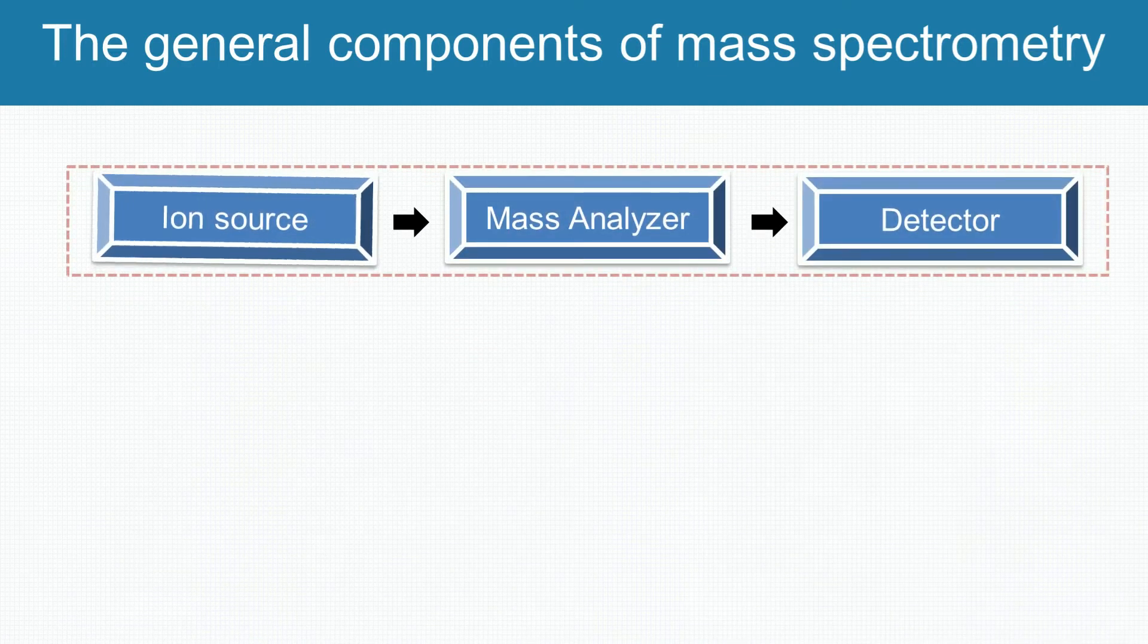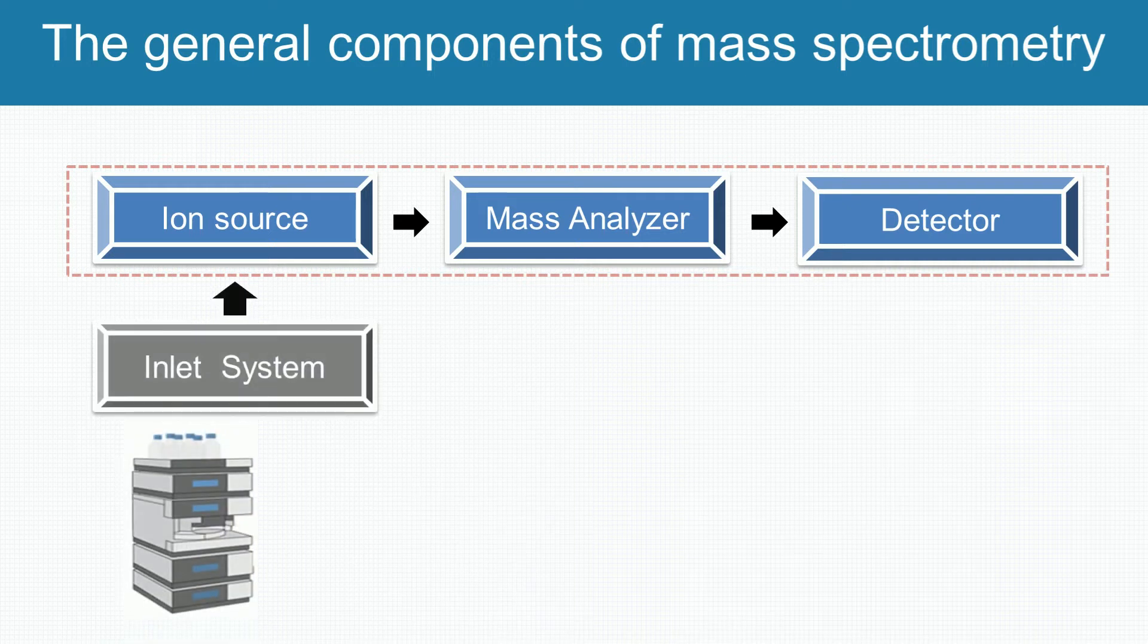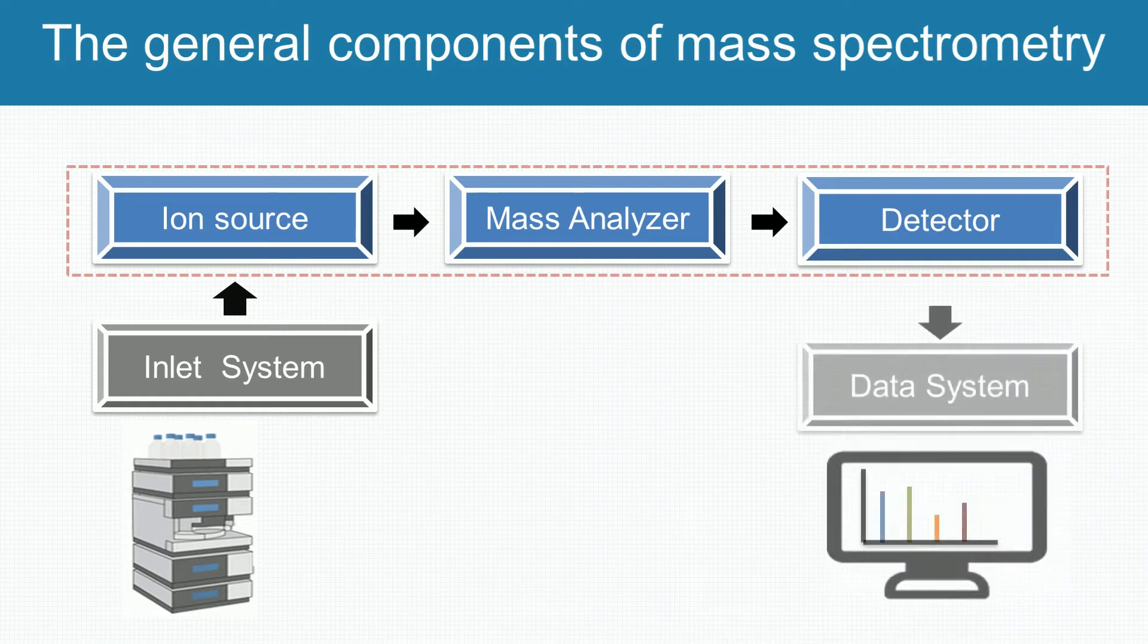The mass spectrometry consists of three main components: the ion source, the mass analyzer, and the detector. In the mass analyzer, the ions are sorted and separated according to their mass and charge. The sample introduction system is essential to introduce the samples into the ion source. A computer and software are also important.